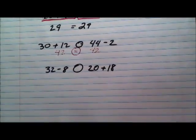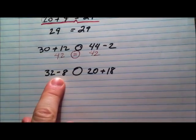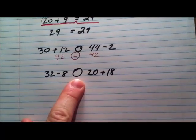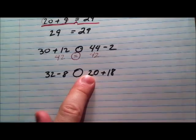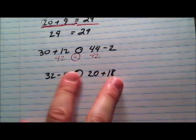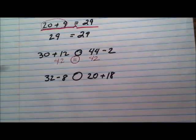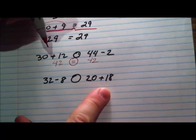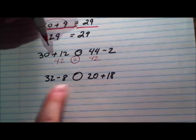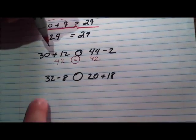Next example. Here we have 32 minus 8 is equal or not equal to, we're not sure yet, 20 plus 18. We want to check that. We want to make sure does this balance out. So we're going to choose the sides that need to get reduced or simplified. In this case, we can simplify both sides. So let's see here,